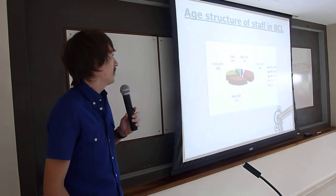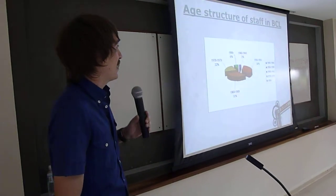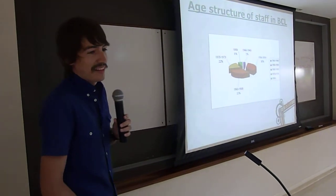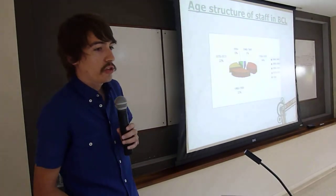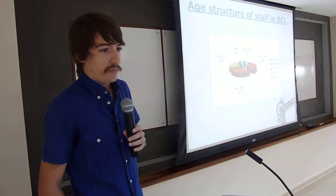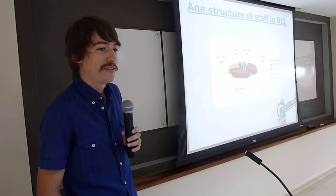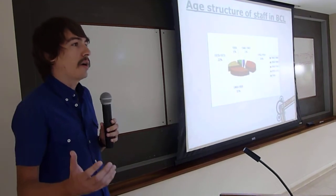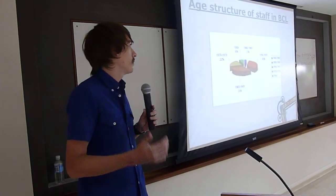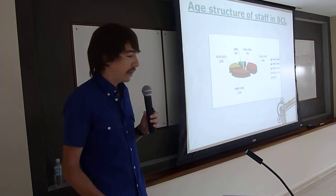Oh, this is the painful slide. This is the age structure in Belgrade City Library. As you can see, the majority of the population is over 50 years old. So it's hard to navigate development with that kind of age structure.